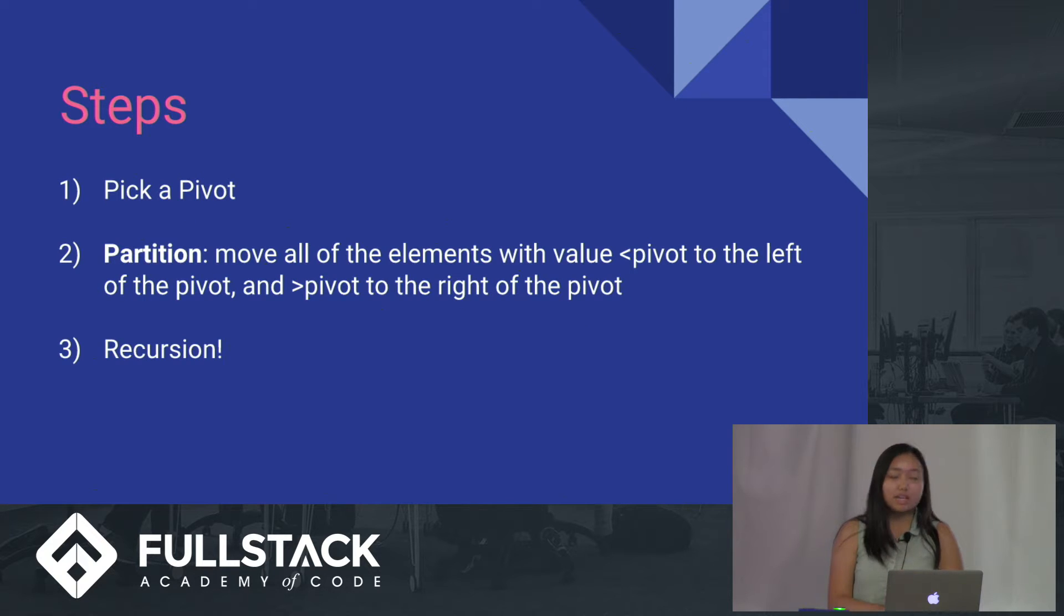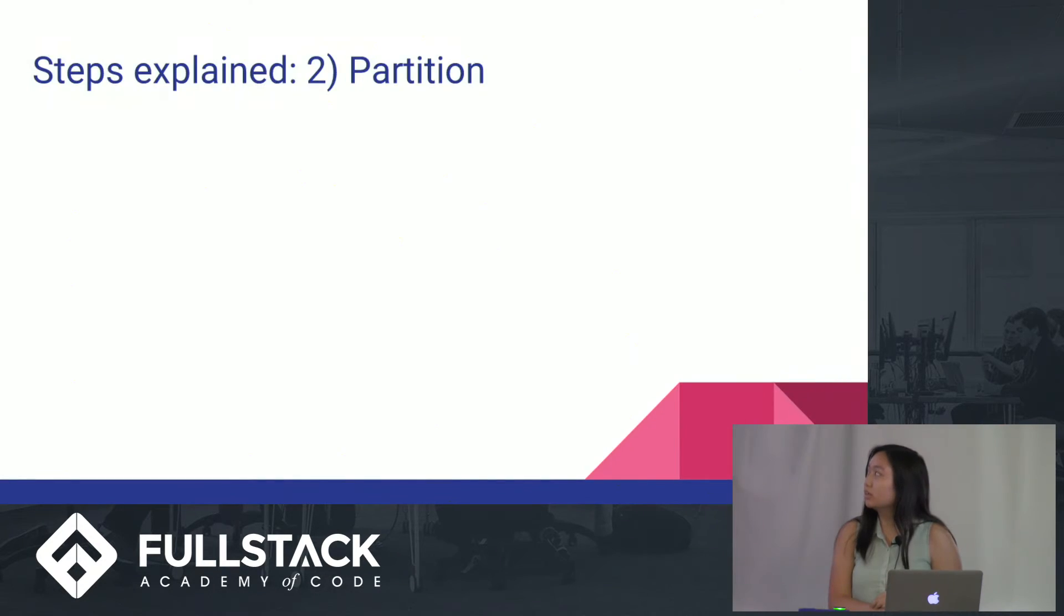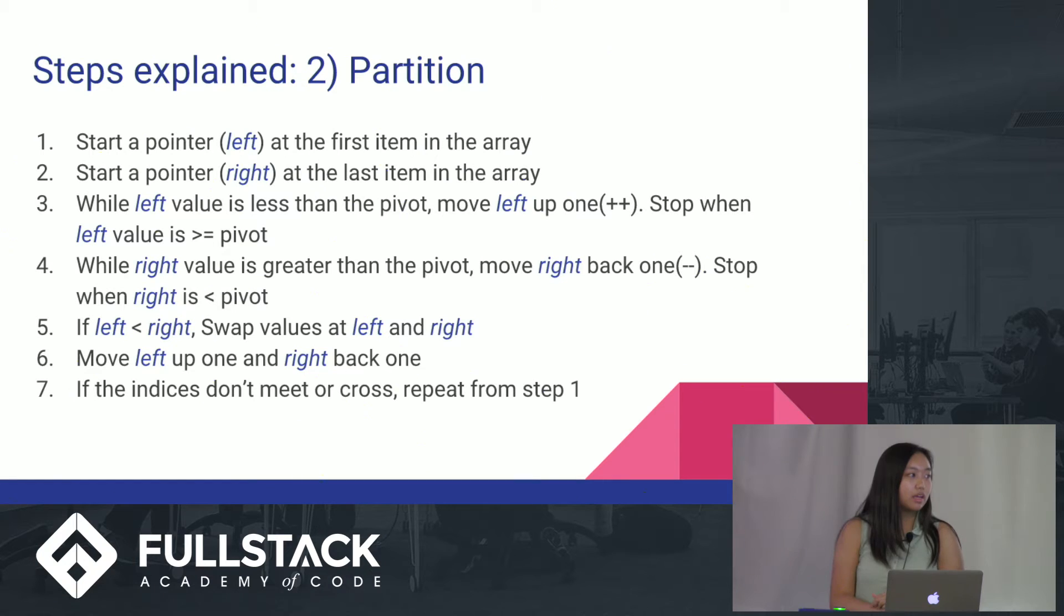I'm going to start with step two, because I think you guys need to know more about the algorithm to know how to pick a good pivot. Step two is the partition step. This is the algorithm. It looks like a lot, but it's pretty easy after you visualize it. So you start a pointer at the left side of the array, and then you start a pointer at the right side of the array, and then you have a pivot somewhere in the middle.